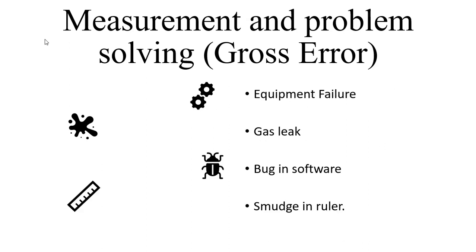Equipment failure and malfunction is from the measuring device or instrument. This could be from smudged markings on a ruler or a leaking hose of a carrier gas of an HPLC instrument.